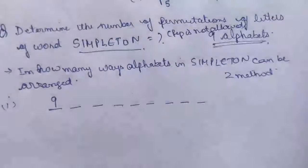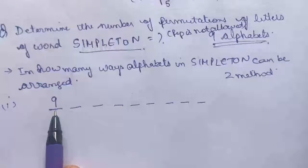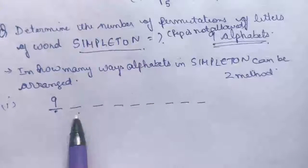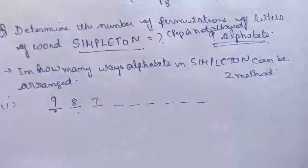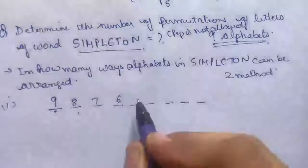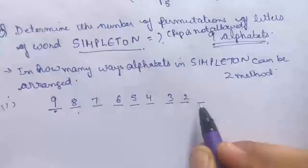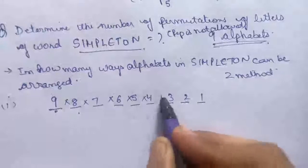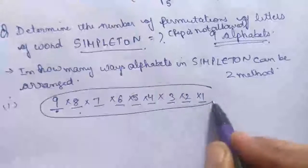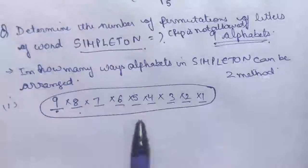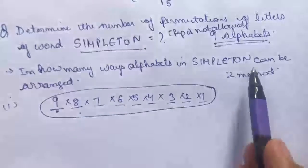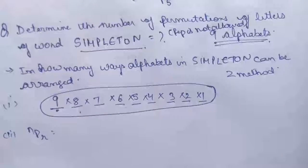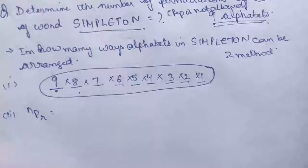Repetition is not allowed. If one alphabet is placed in the first position, there are 8 options left for the second, 7 for the third, 6, 5, 4, 3, 2, and 1 for subsequent positions. By the fundamental principle of multiplication, all these are multiplied together, giving the number of permutations of letters of the word 'simpleton.'